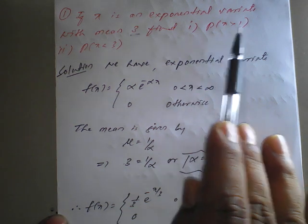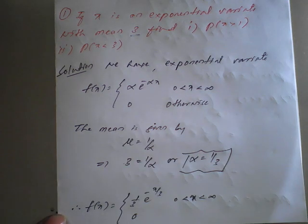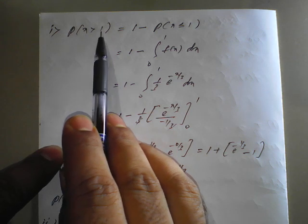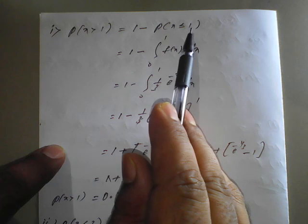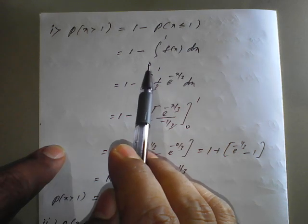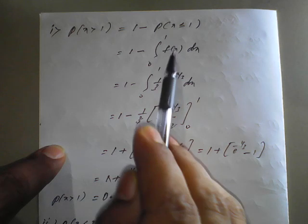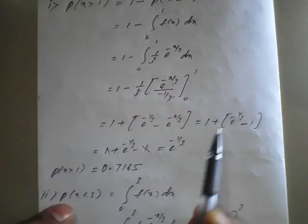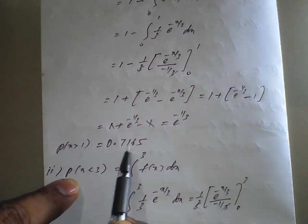For the first result, P(X > 1): this can be rewritten as 1 minus P(X ≤ 1), which equals 1 minus the integral from 0 to 1 of (1/3) e^(minus x/3) dx. Applying upper and lower limits, we get e raised to minus 1/3. Checking this value in the calculator gives the answer 0.7165.